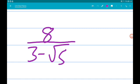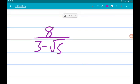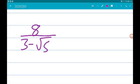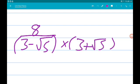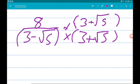To do that we use the difference of two squares. So we multiply top and bottom by 3 add root 5. So, up on top we're going to get 24 add 8 root 5.